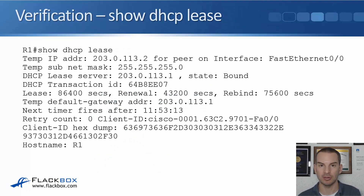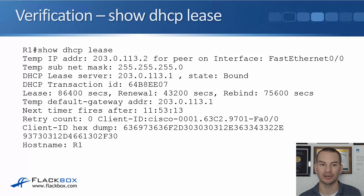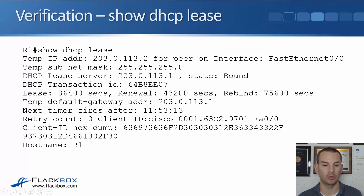That's it — simple configuration to support an interface as a DHCP client. To get information about the DHCP lease, use show dhcp lease. In the example here we can see that we were given IP address 203.0.113.2 by the provider. We can also see the DHCP lease server — that's the server that gave us the IP address — and it is at 203.0.113.1. Okay, so that's how we do the configuration. Let's have a look at this in the lab.